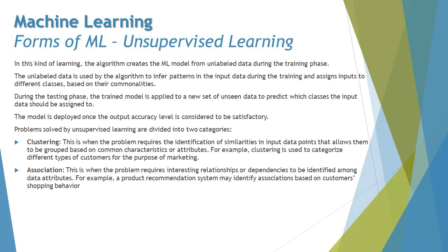Problems solved by unsupervised learning are also divided into two categories. The first is clustering — when the problem requires identification of similarities in input data points to group them based on common characteristics or attributes. For example, clustering is used to categorize different types of customers for marketing purposes. The second is association — when the problem requires identifying interesting relationships or dependencies among data attributes, such as a product recommendation system identifying associations based on customer shopping behavior.